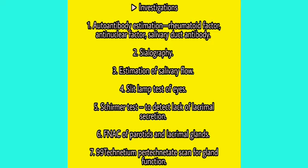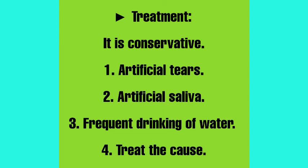Investigations include: first, autoantibody estimation — rheumatoid factor, anti-nuclear factor, and salivary duct antibody, which will be positive in secondary Sjögren's syndrome; second, sialography; third, estimation of salivary flow; fourth, slit-lamp test of the eyes; fifth, Schirmer's test to detect lack of lacrimal secretion; sixth, FNAC of parotid and lacrimal glands; and seventh, Technetium-99 pertechnetate scan for gland function.